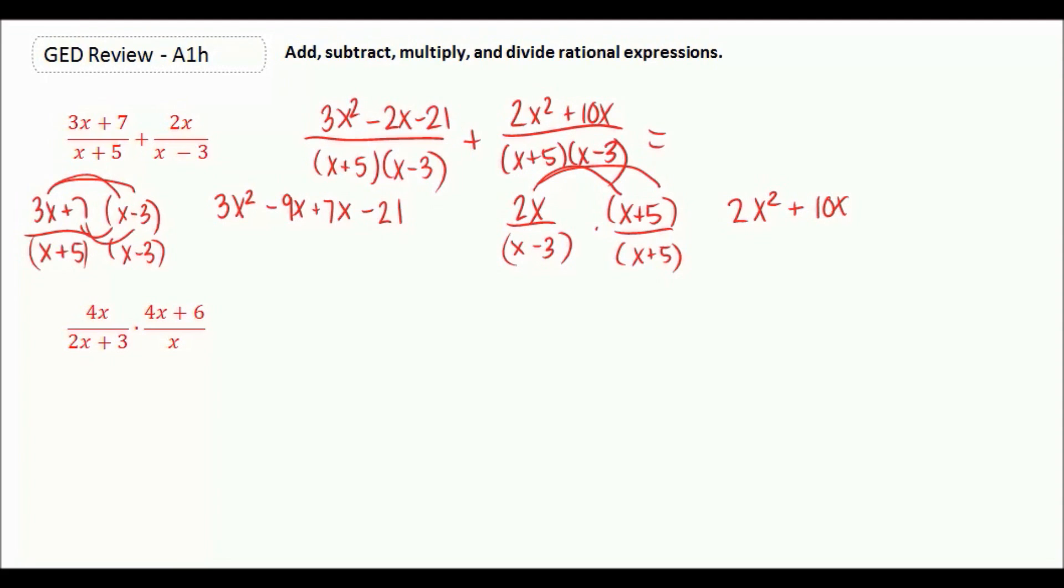So our second fraction gives us 2x squared plus 10x over x plus 5 times x minus 3. We're going to keep going and combine our like terms together. So 3x squared plus 2x squared is 5x squared. Negative 2x plus 10x is 8x, and then minus 21.